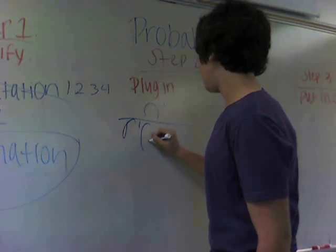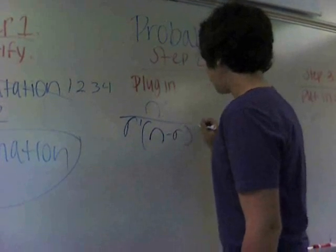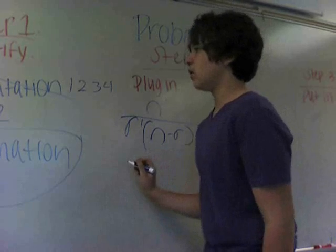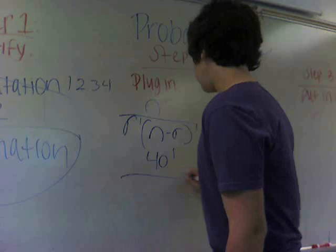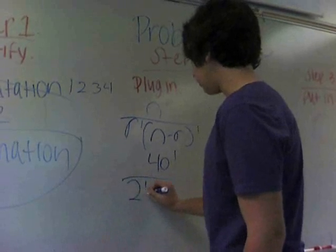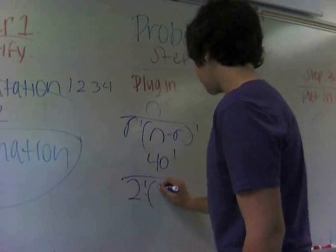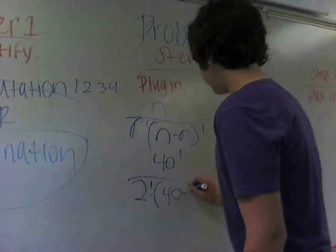So our n is going to be 40, put a factorial, divided by 2 factorial, the number he can pick, times 40 minus 2 factorial.